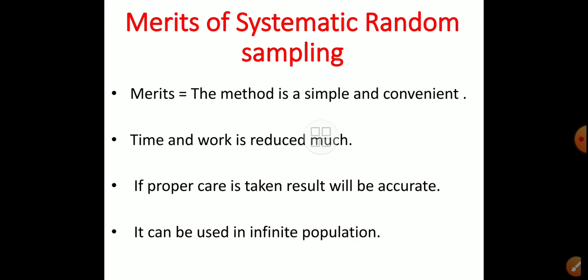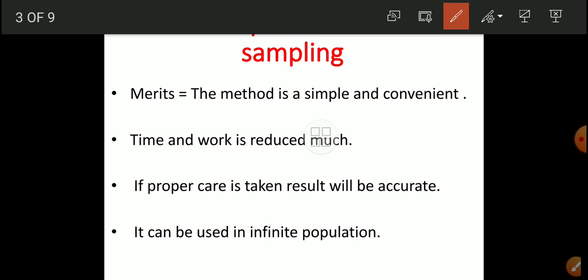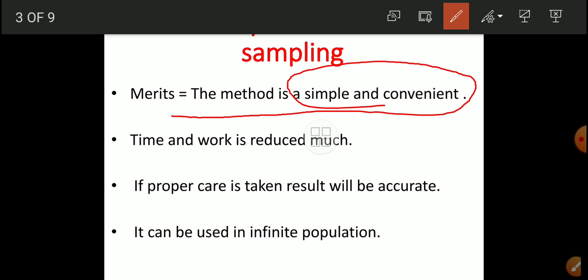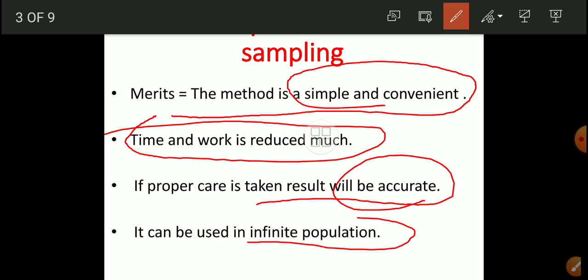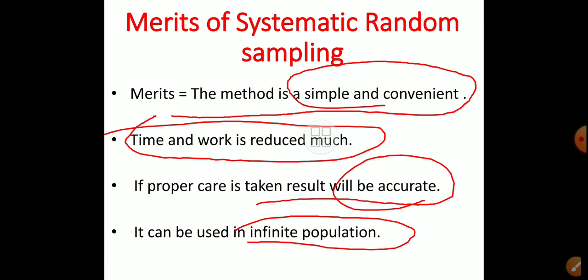The first merit is that the method is simple and convenient, and time and work are reduced. Out of 500 students, we took only every 10th, giving us 50 students as a sample, reducing time. If proper care is taken, the result will be accurate. This systematic random sampling is a very accurate method when proper care is taken during selection. It can also be used for an infinite population.